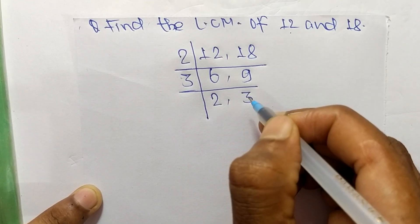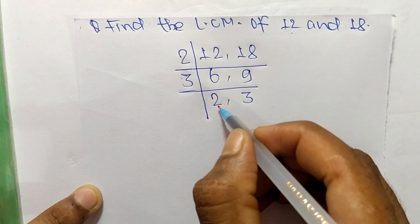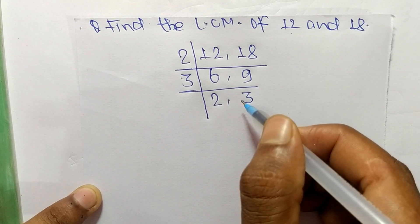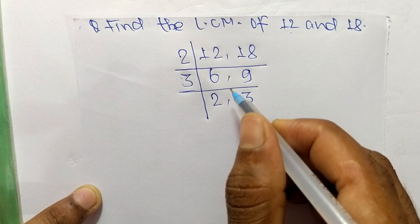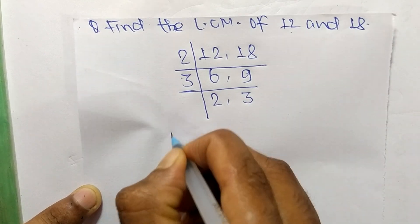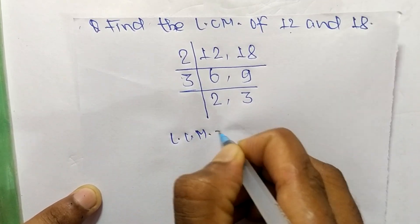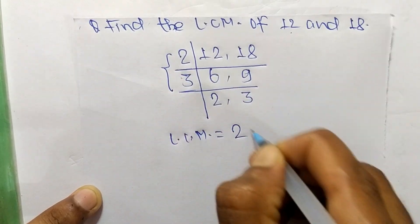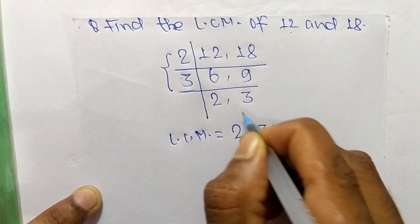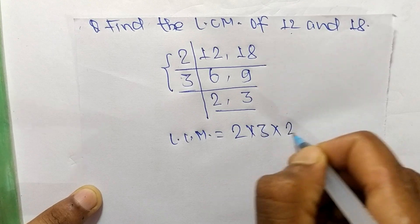So now we get here 2 and 3 which are not exactly divisible by the same number. So its LCM is equal to, from this part it is 2 times 3 and from this part also 2 times 3.